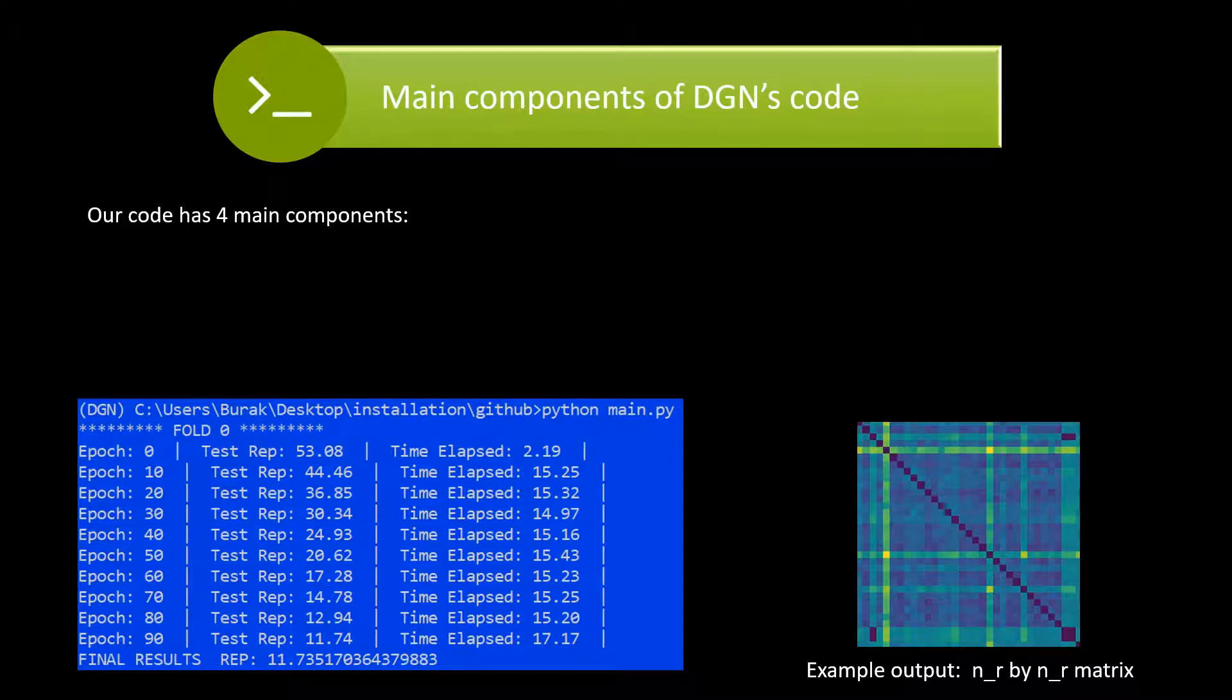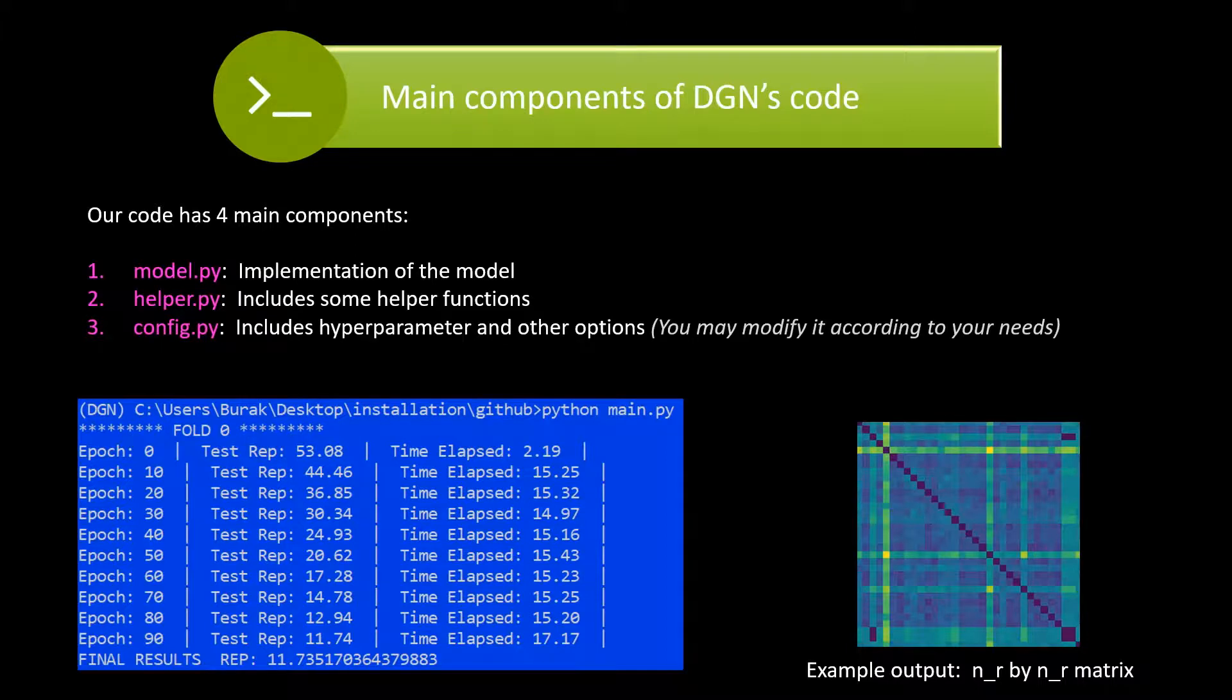Our code has four main components. Model.py contains the implementation of the model. Helper.py includes needed helper functions. Config.py includes hyperparameters and other options. You may modify it according to your needs. And main.py is the driver code for using our model via terminals.